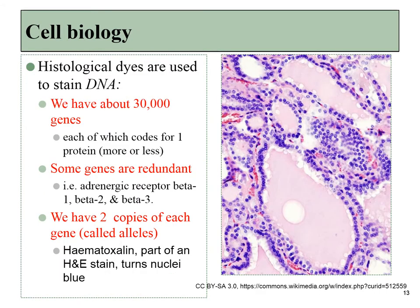Human cells contain about 30,000 genes — an inexact number because not everyone counts the same way. All humans have the same genes in all of our cells, with the exception of some sex-linked traits on the Y chromosome. For all other genes, we have two copies known as alleles — one inherited from the mother and one from the father.